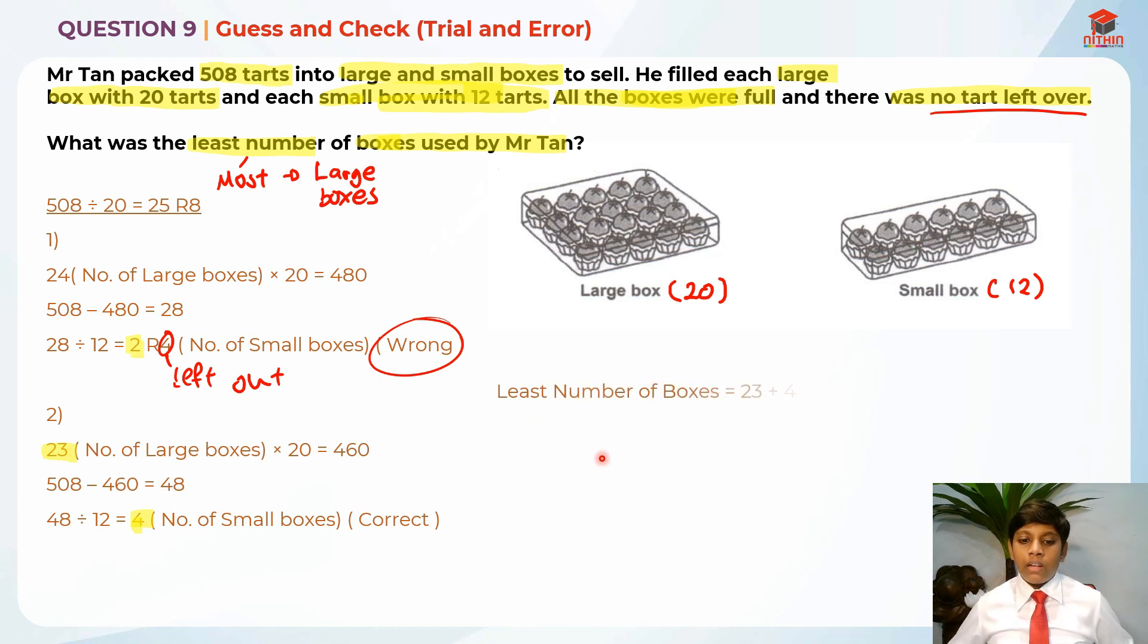In order to find the least number of boxes, we just take 23, the large boxes, plus 4, the small boxes. It will give us 27 as the answer for question 9. I hope you understand my explanation for this question, question 9, and I hope you have learned something new from this question. Thank you and bye-bye. I'll see you in my next video. Bye!